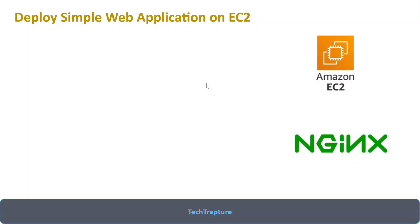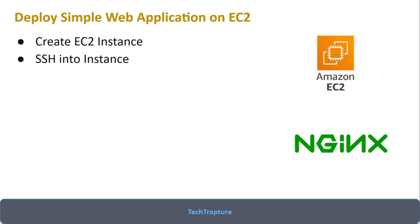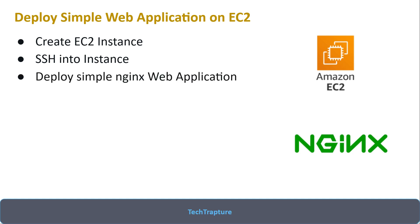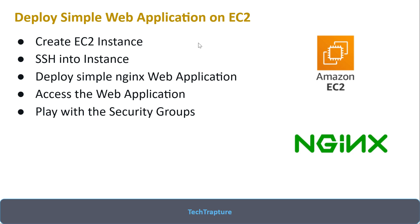Welcome to TechCapture. In this video we are going to deploy a simple web application on an Amazon EC2 instance and also play with security groups. Here's what we'll cover: first we'll create a simple EC2 instance with a default configuration, then we'll SSH into that instance, create the required inbound and outbound rules in security groups, deploy a simple nginx web application, and try to access it from the internet.